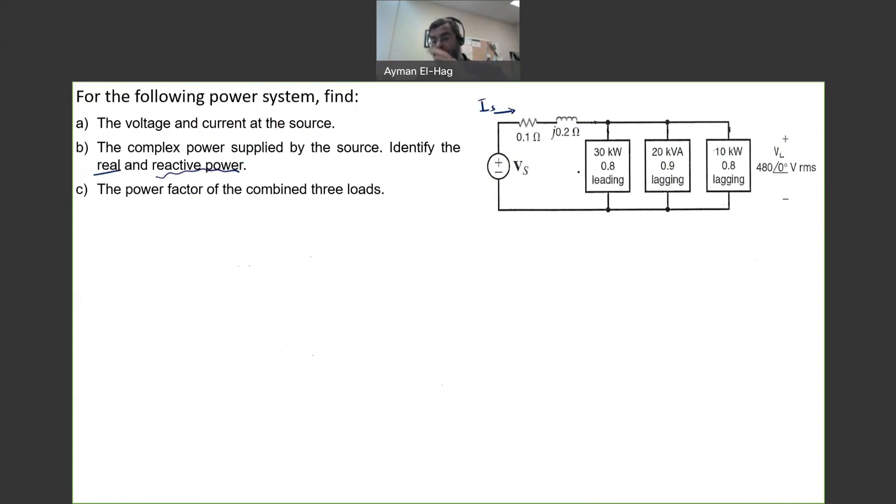Now, each load is connected to a constant voltage, which is 480 volts and angle of zero. So this current will consume a current I will call it I1, this will consume another current called I2, and this is I3. So basically, your Is is nothing but the summation of these three currents: I1 plus I2 plus I3. So the key point is how to find I1, I2, and I3.